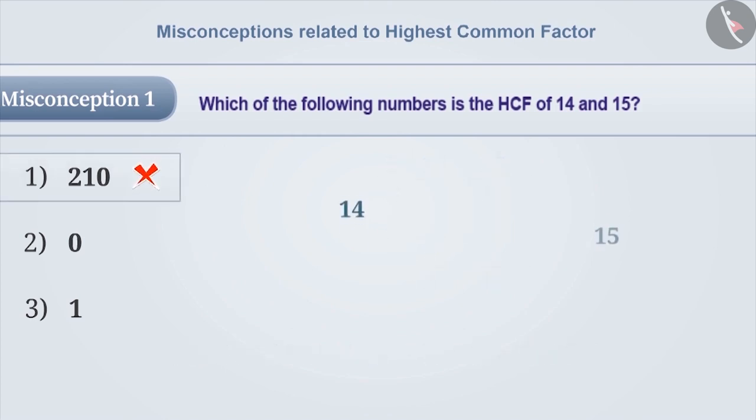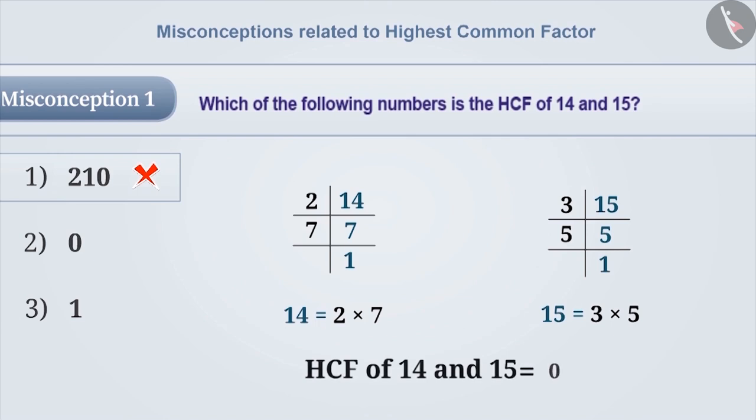In order to find out HCF, prime factorization of 14 and 15 is done. Since there is no common factor among the factors of these two numbers, 0 is considered as HCF.